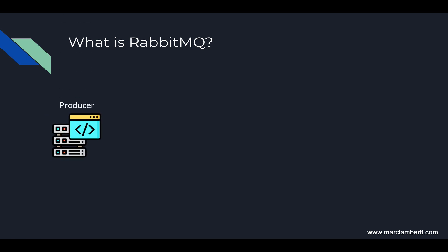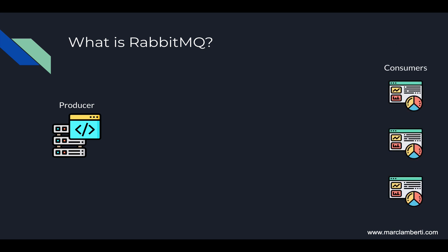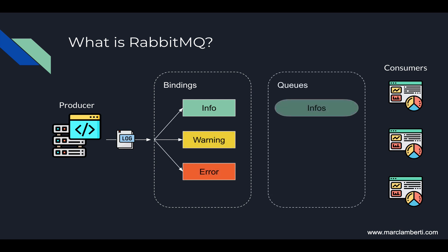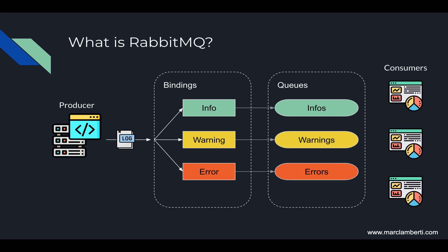Let's say we have a producer like a login system producing different levels of logs such as info, warning, and error. On the other side there are a bunch of consumers — three in our case — each one analyzing a specific kind of log. RabbitMQ allows you to specify bindings. A binding is a relationship between an exchange and a queue. Since we have three log levels, we specify three bindings, one for each, bound to their corresponding queue: either info, warning, or error. Finally, each consumer is waiting to receive the log messages coming from its queue. That's how you can spread messages between multiple services in a very elegant way.